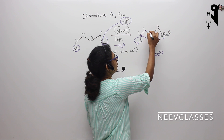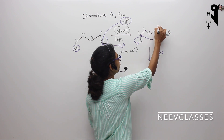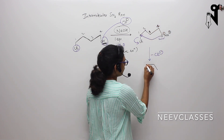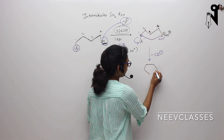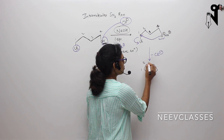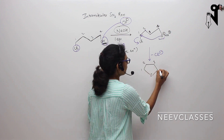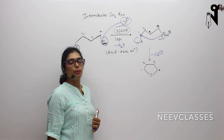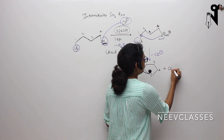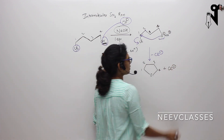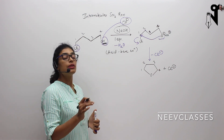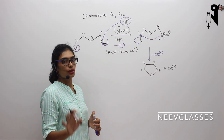So we will have one, two, three, four carbons. An epoxide will be formed with the release of Cl-. This is called intramolecular SN2.